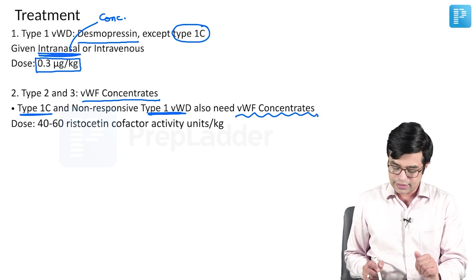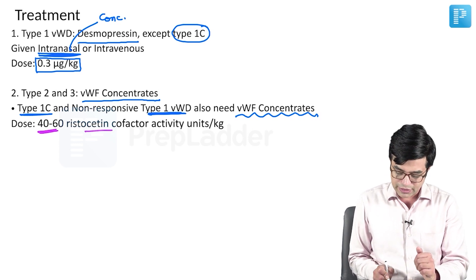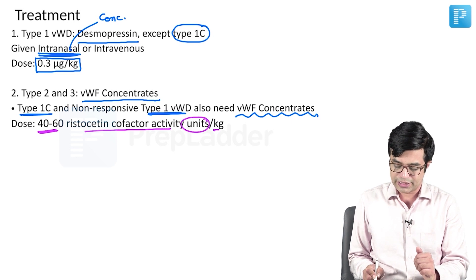The dose is measured in cofactor activity assay. So, 40 to 60 ristocetin cofactor activity units per kg.